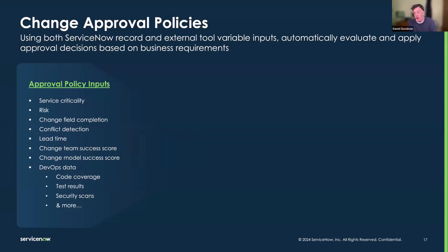We can look at things like outage records, whether certain fields have been completed in the change, whether conflict protection has been done, whether the change has been deconflicted. We might want to look at things like lead time — if a change has a low lead time, you may want additional approvals. These are the types of checks we can embed in approval policies.